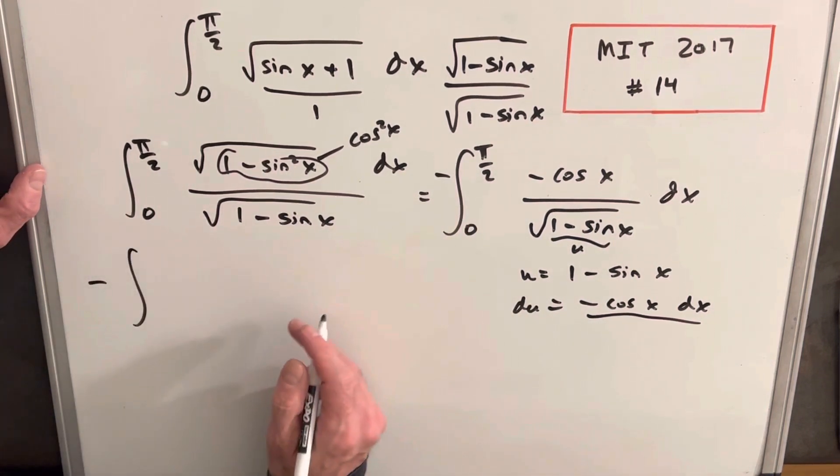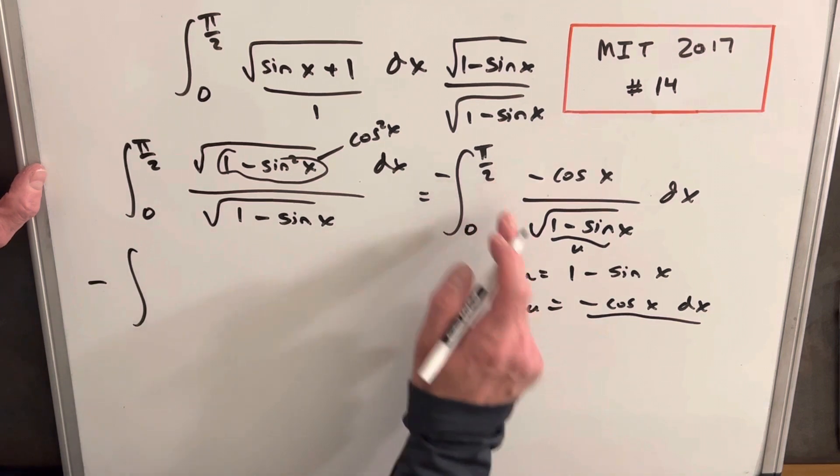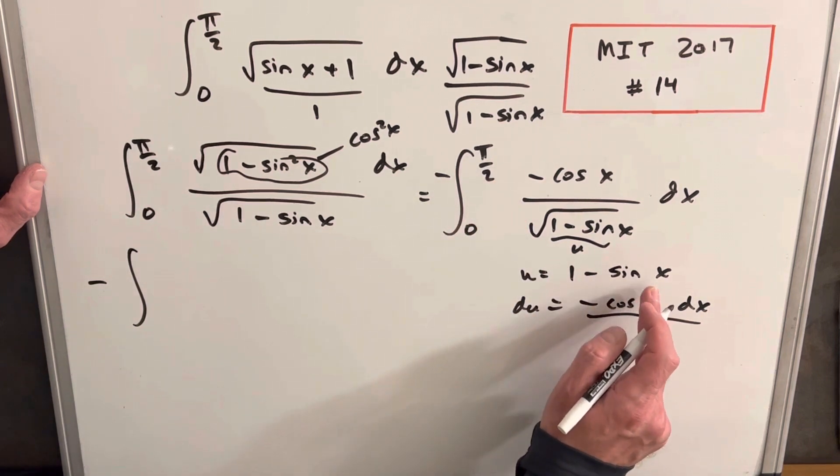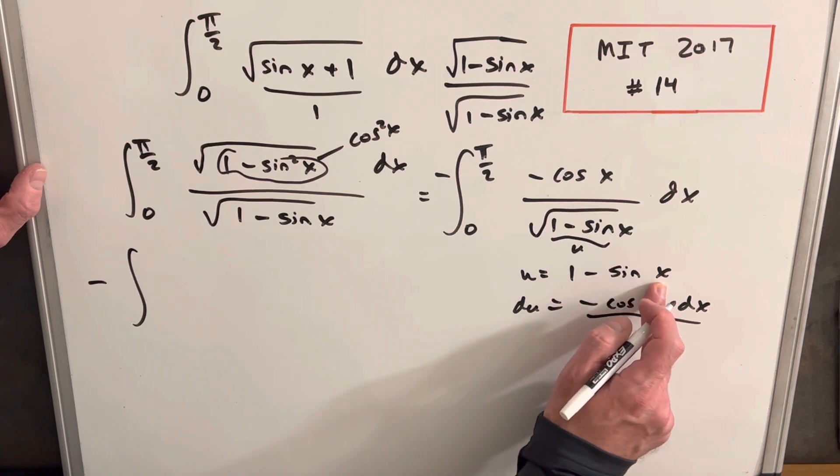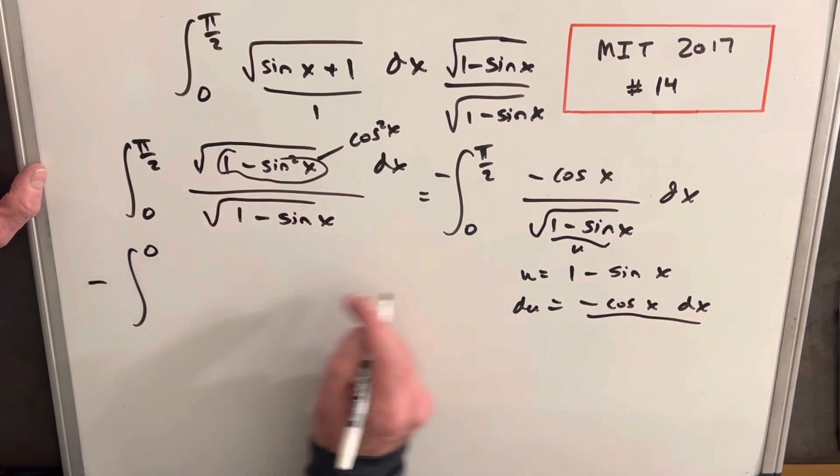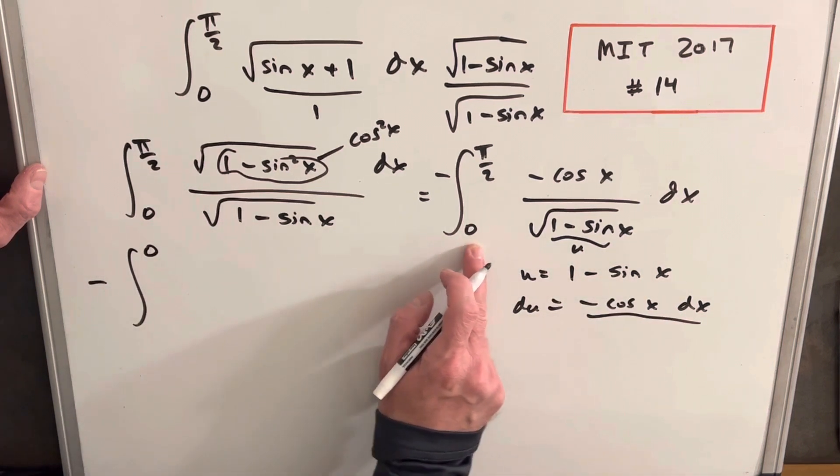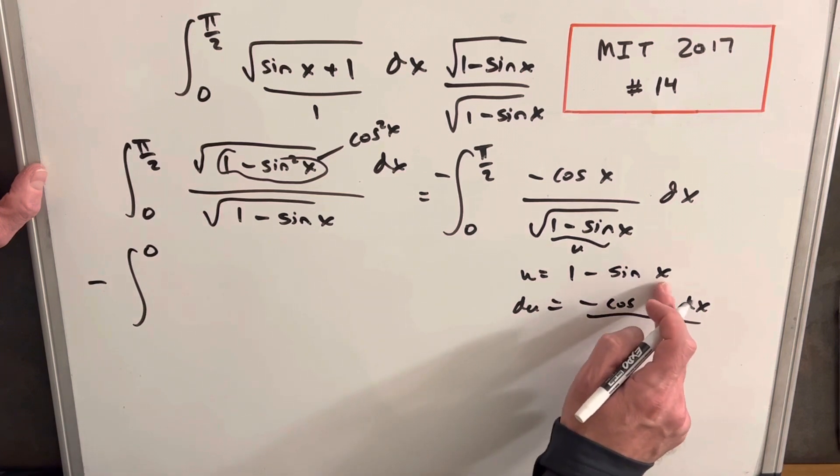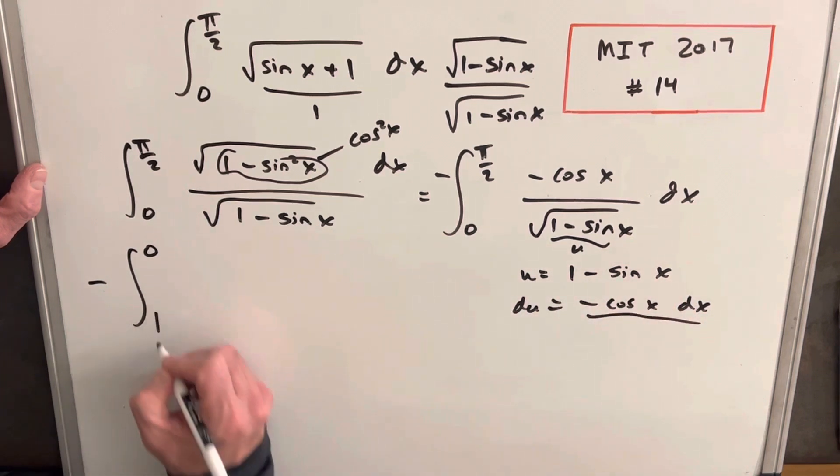So then rewriting this, we'll update our bounds of integration. We'll plug pi over 2 in here. Sine of pi over 2 is 1. 1 minus 1 is 0. And then doing the same thing for 0, plugging in. Sine of 0 is 0. 1 minus 0 is 1.